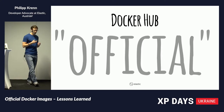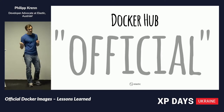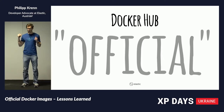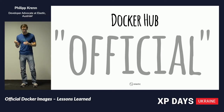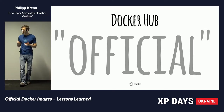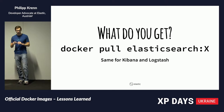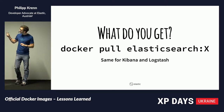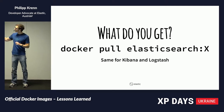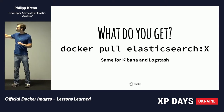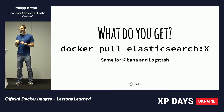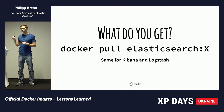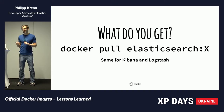If you head over to Docker Hub, it will normally tell you that the images there are official. What do you get if you pull these images — Docker pull Elasticsearch, whatever version number? Same for Kibana and Logstash — those are official. What does that mean?